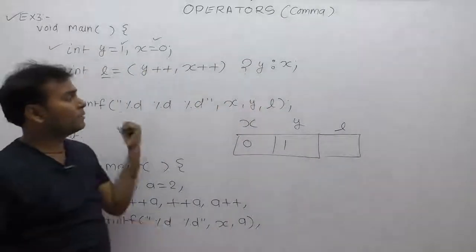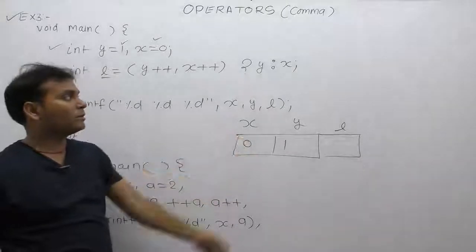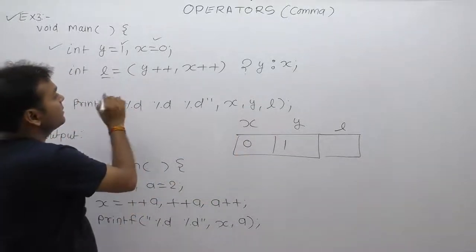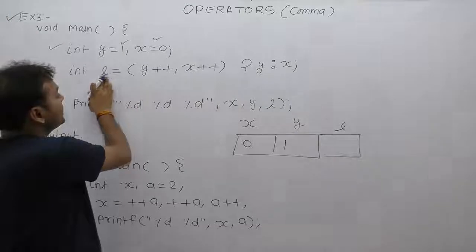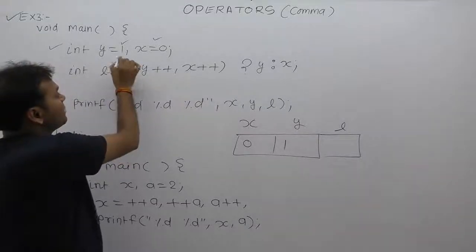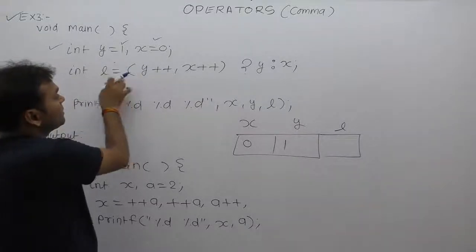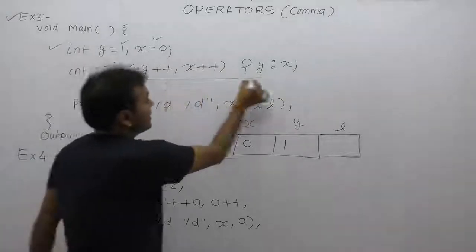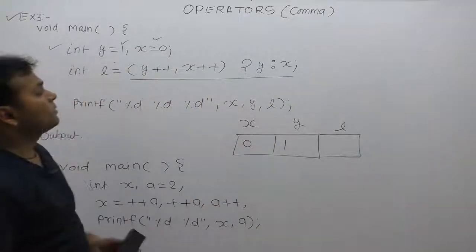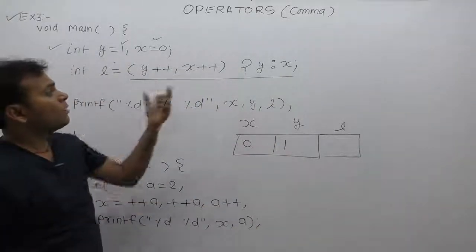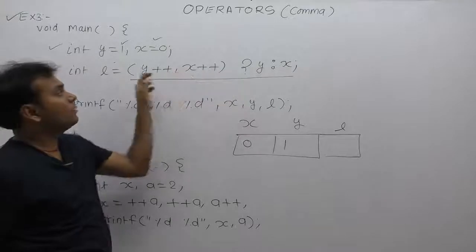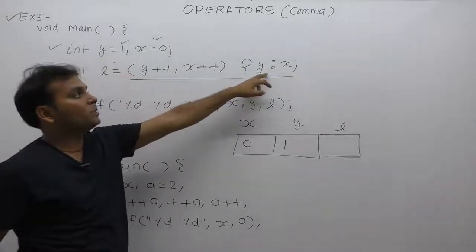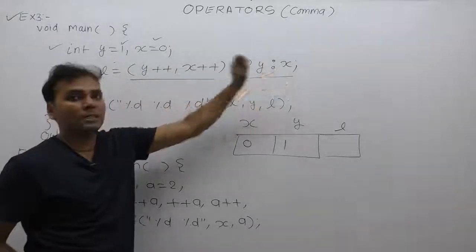First, memory allocation is done for all required variables. Next, we solve these expressions. In this case, the least priority is taken by assignment, so assignment is solved last. The conditional operator is evaluated next — its first operand is all those expressions, the second operand is y, and the third operand is x.